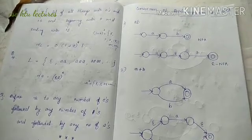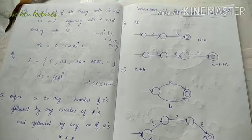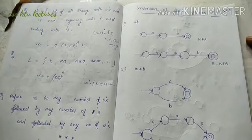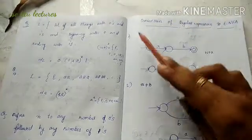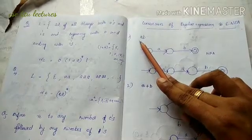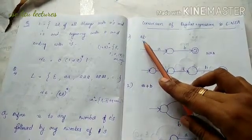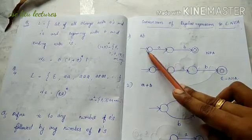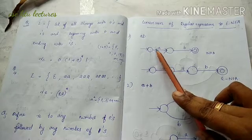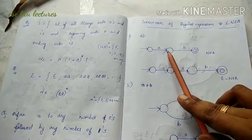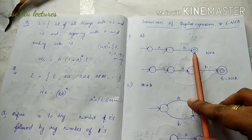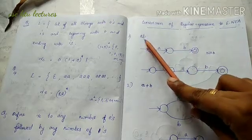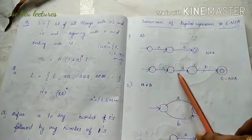We have a regular expression and we need to draw the corresponding Epsilon-NFA. The first question is AB — that is concatenation. If you have A concatenated with B as a string, we need an NFA to represent it. First, a state, then A as a state, then B, and the final state. This is the NFA for the regular expression AB.